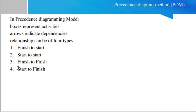In the precedence diagramming method PDM, boxes represent activities and arrows indicate dependencies. There are four types of relationships: finish to start, start to start, finish to finish, and start to finish.